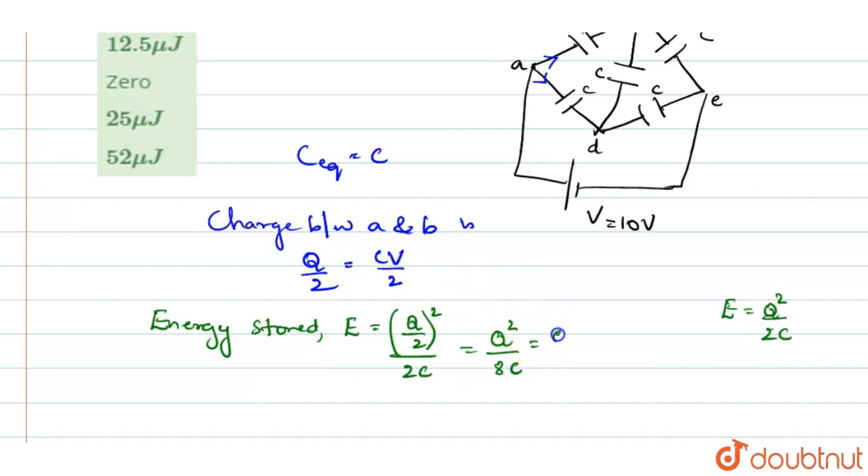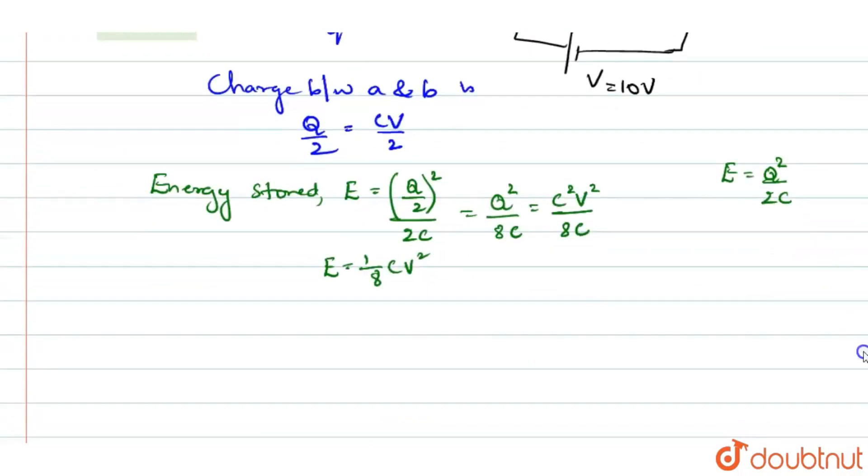Q as we know it is CV, so C square V square by 8C. And so, the energy stored expression becomes C1 gets cancelled. 1 by 8CV square will be the equation in this case.